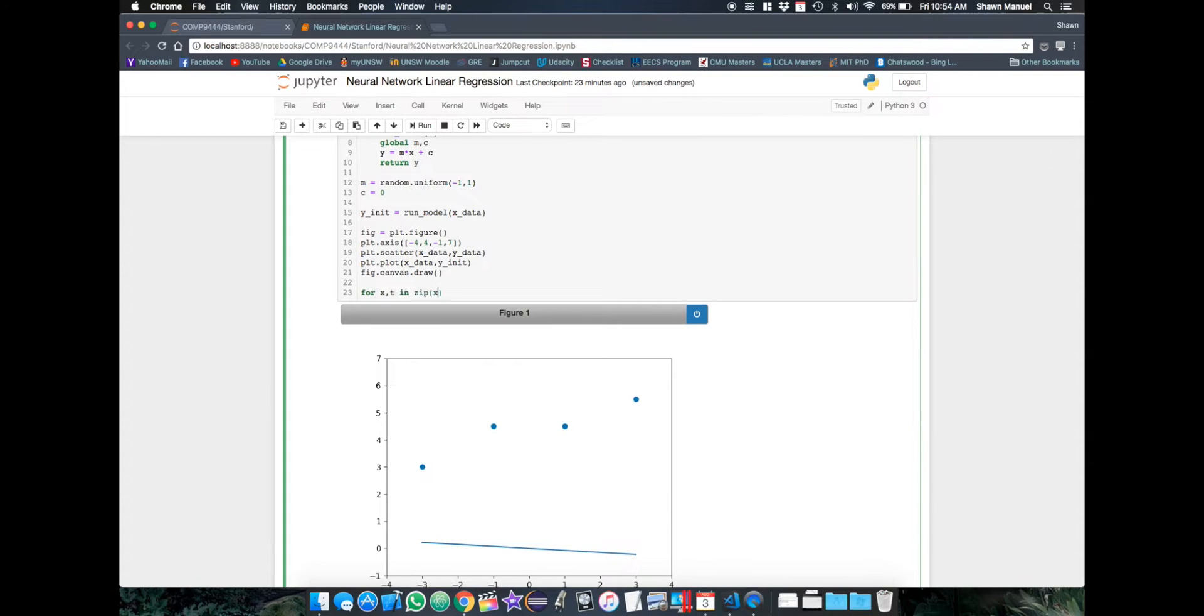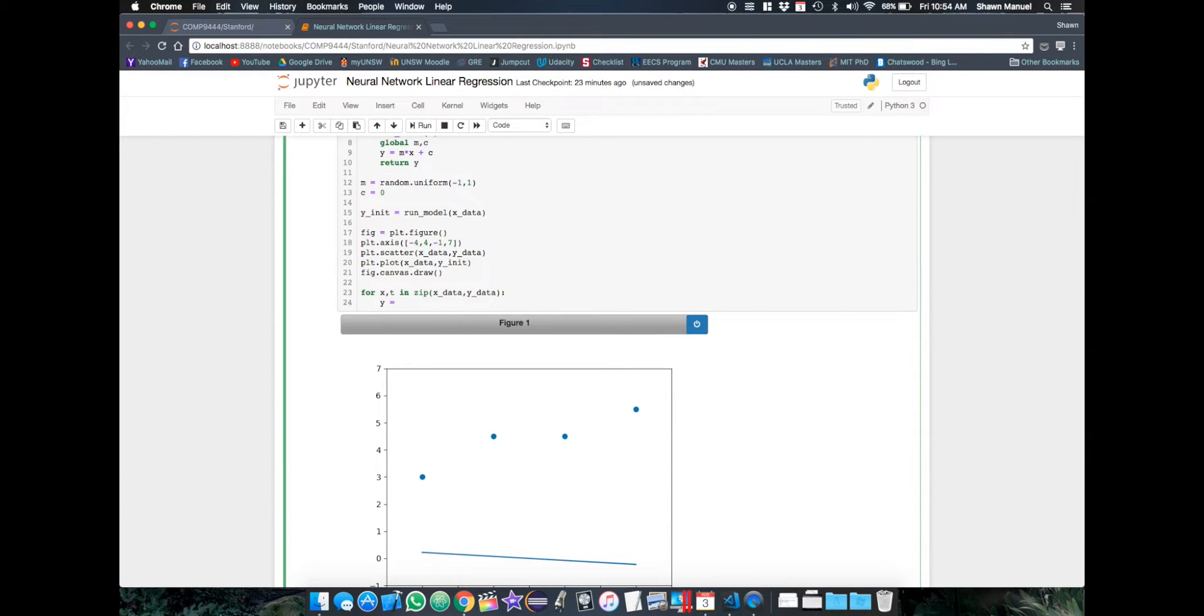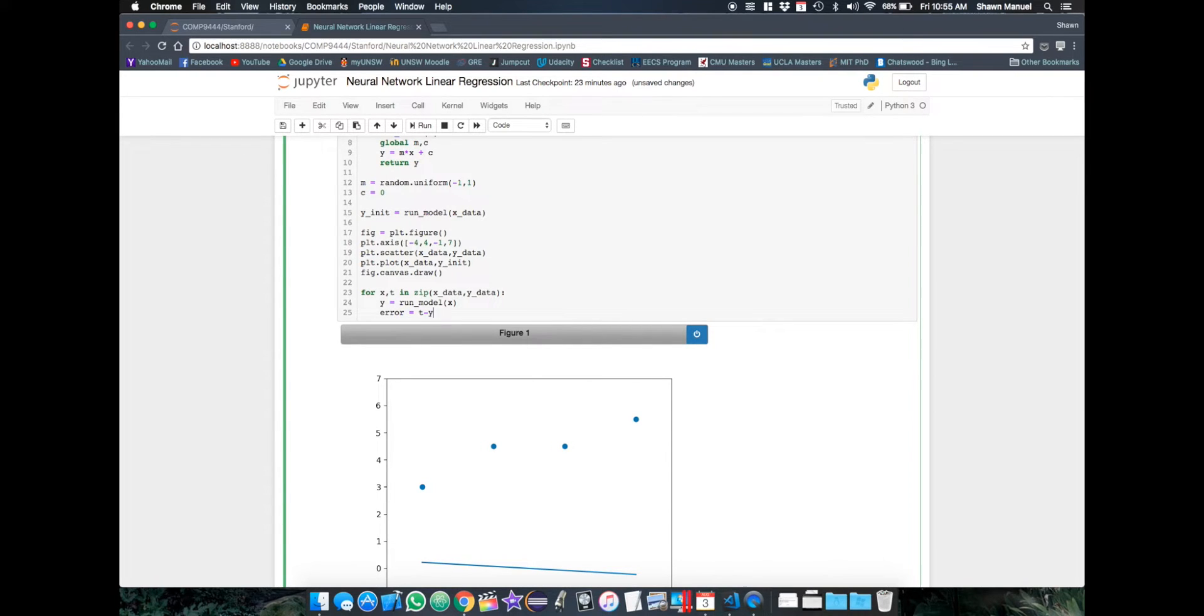Alright, so we're going to go through each xy data point and predict the output and then calculate the signed error, which is the difference between the target value t and the predicted value y. We then make our updates to the weight and bias according to our policy.